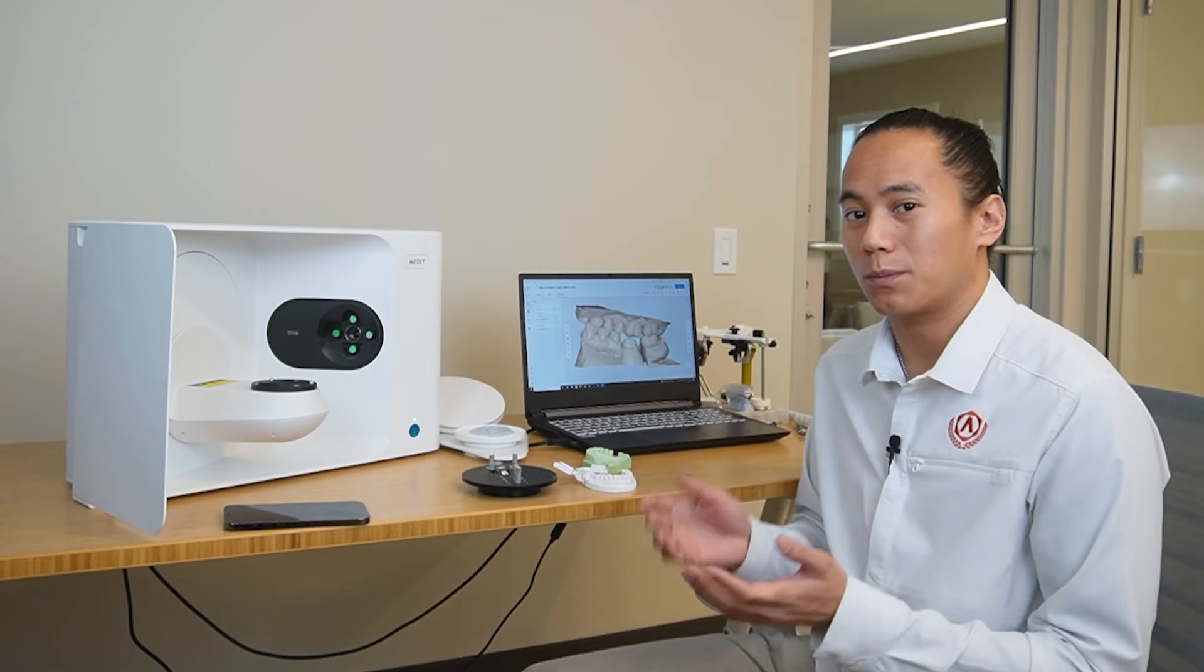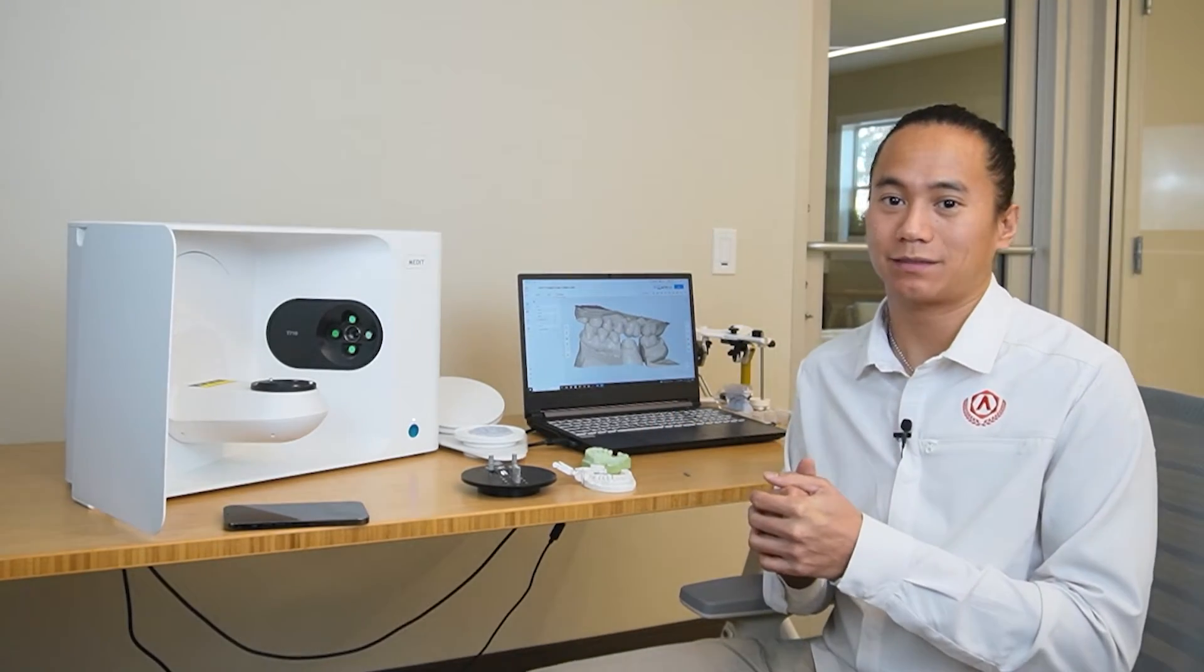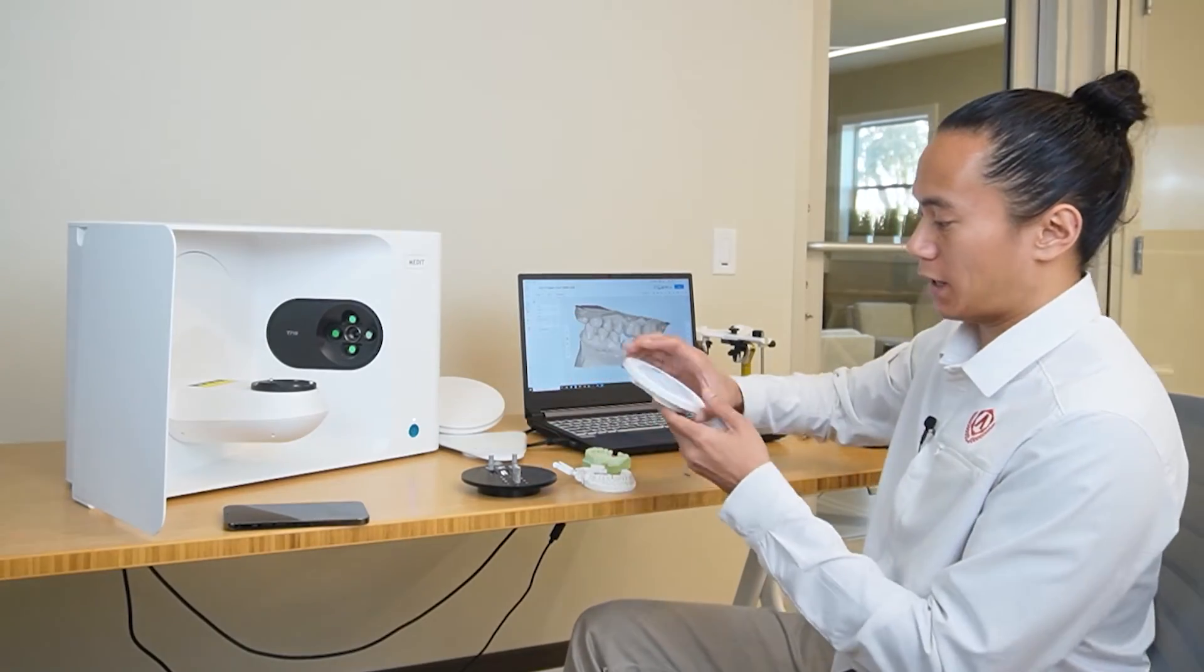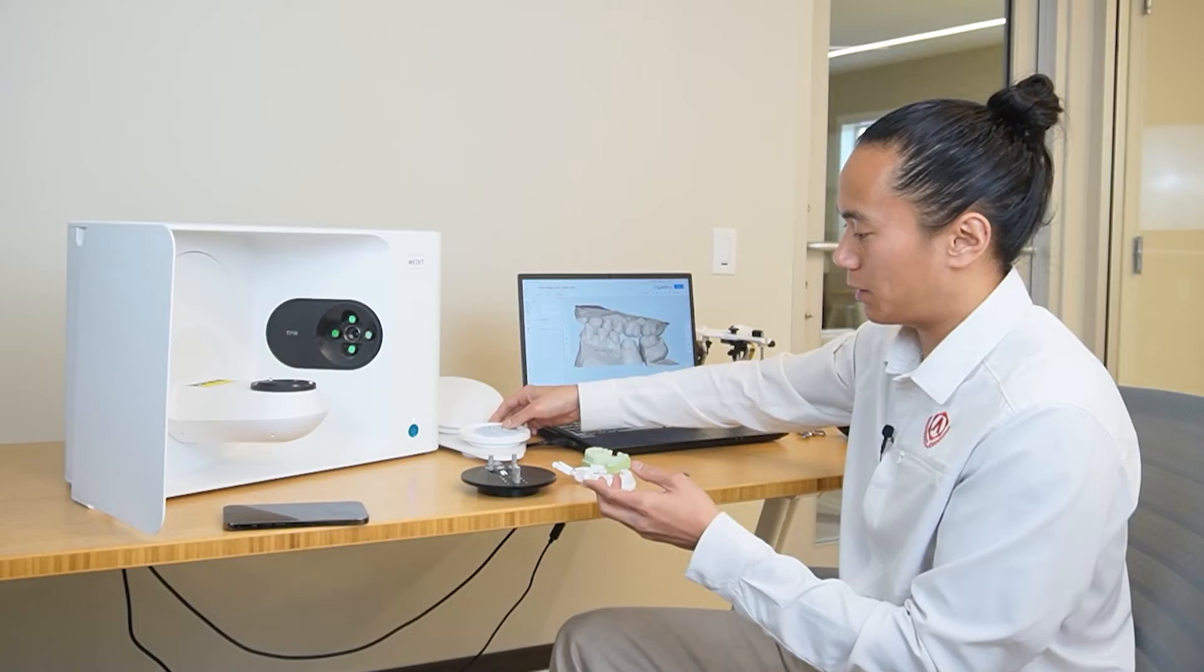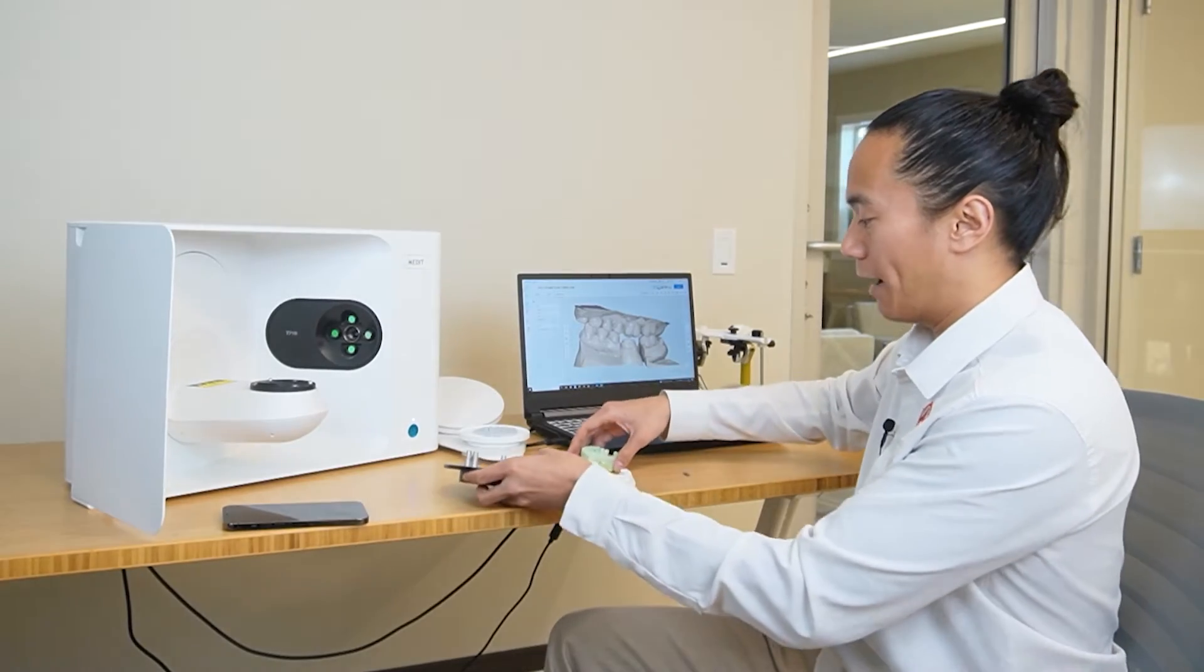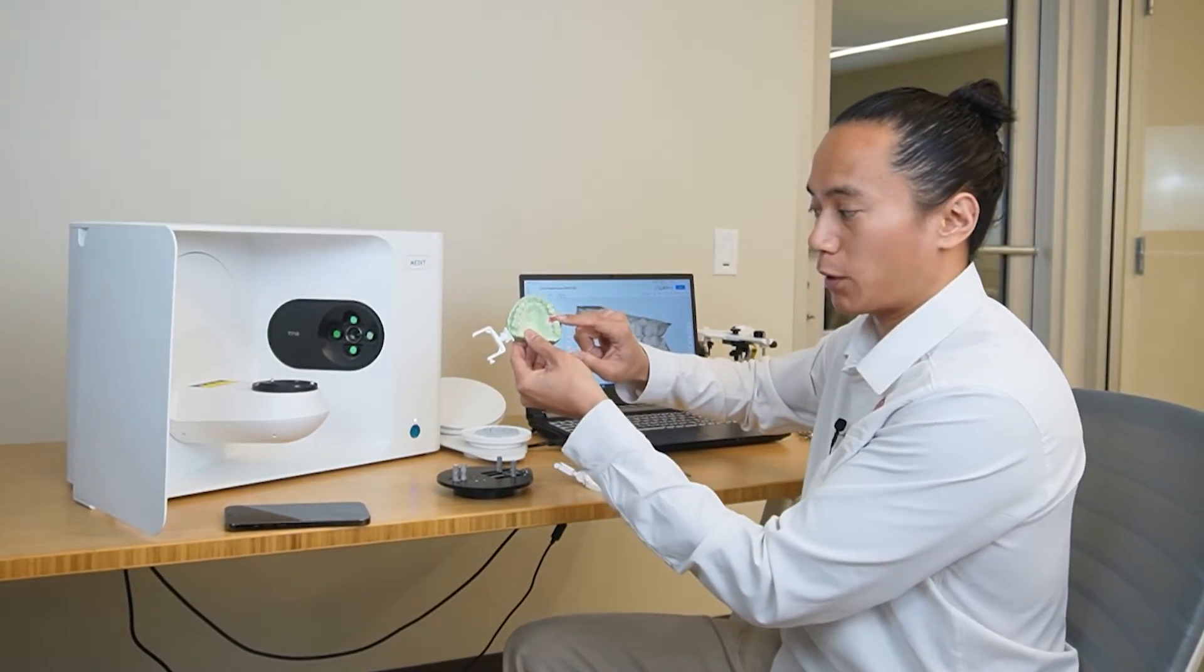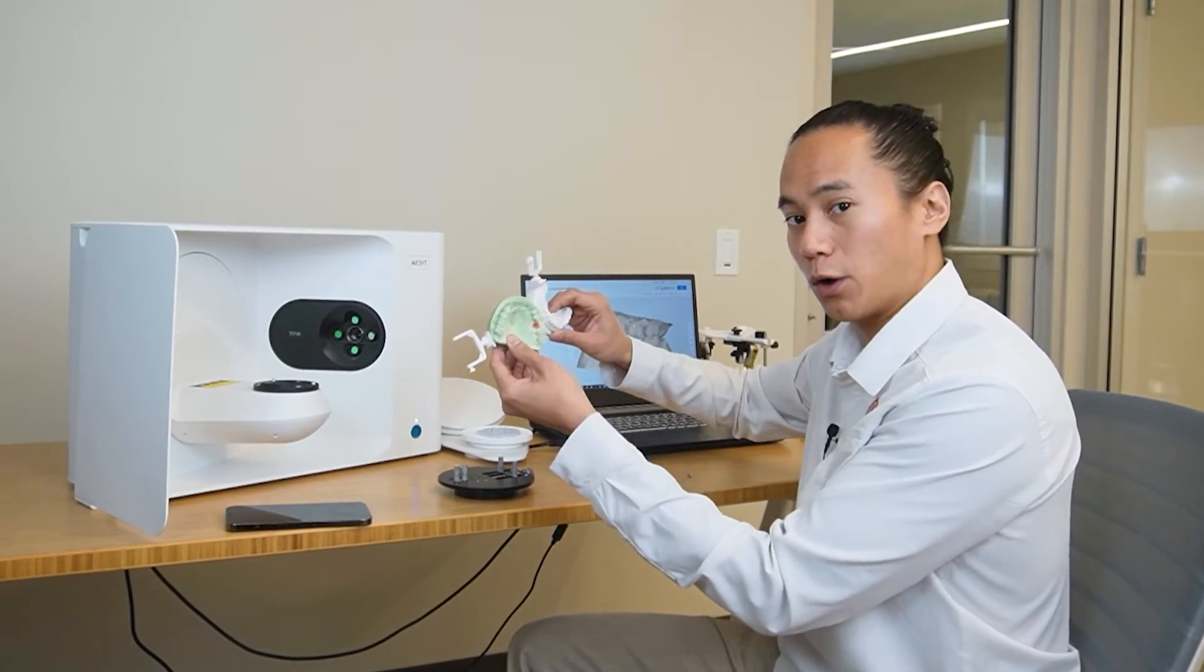All right. So we're also going to be covering over how to scan an implant case today. Unlike the die prepped case, we're not going to be using the flexible multi-die. We're actually going to be using the clamping stage. This one is beneficial when we have full arch models like this. Even though we're only going to be working on a single unit implant, we have both upper and lower full arch models.